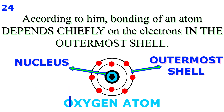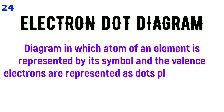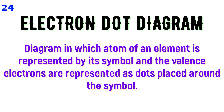My dear little friend, what is an electron dot diagram? In chemical reactions, the combining atoms are represented by means of an electron dot diagram or atomic diagram, in which the atoms of the combining elements are represented as symbols of that element and the valence electrons as dots placed around the symbols.